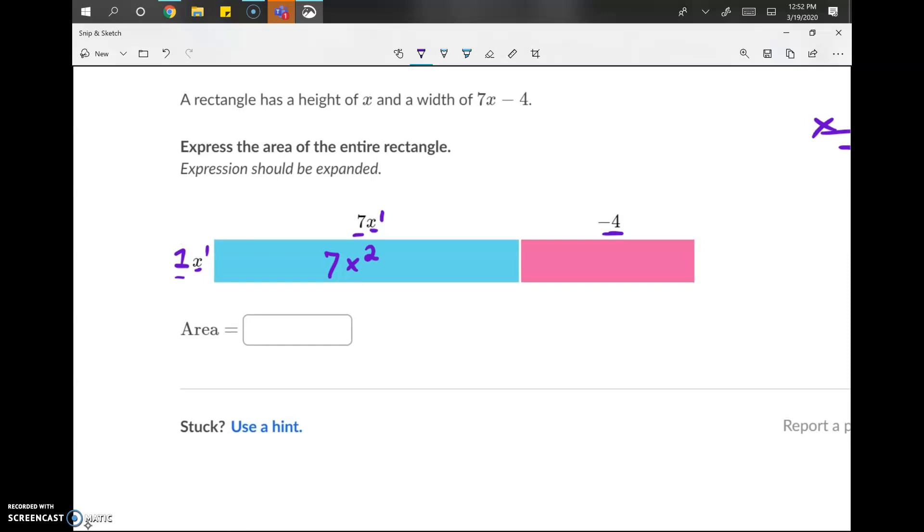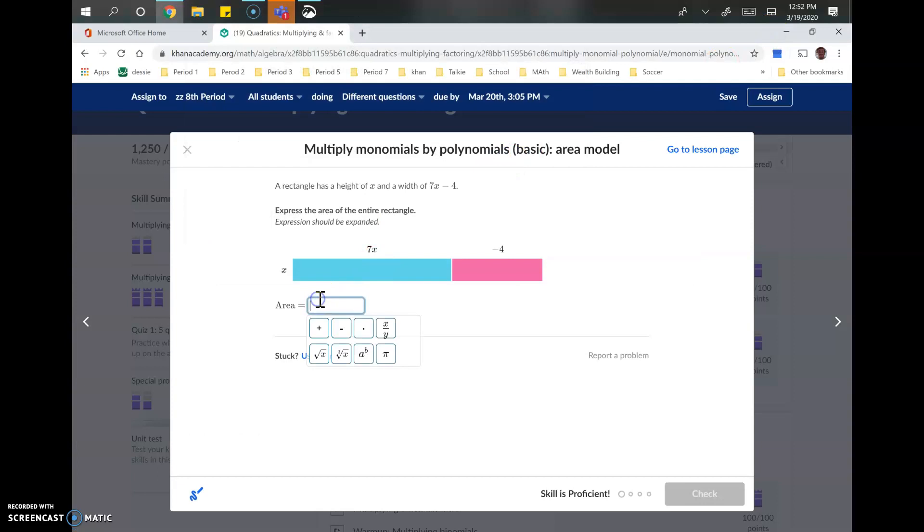In this box we've got negative 4 times 1, which is negative 4. And we've got X times, there's no X here, so it's just negative 4X. And then our final answer, the answer that we're typing in to Con to get it correct, is just 7X squared minus 4X. Those are not like terms, so we cannot combine them.